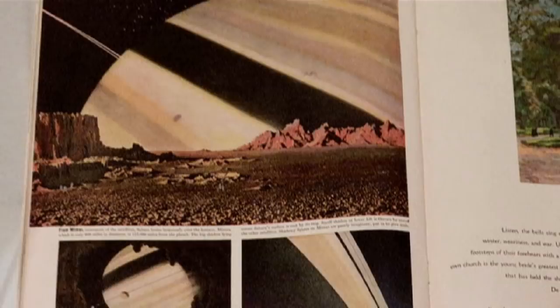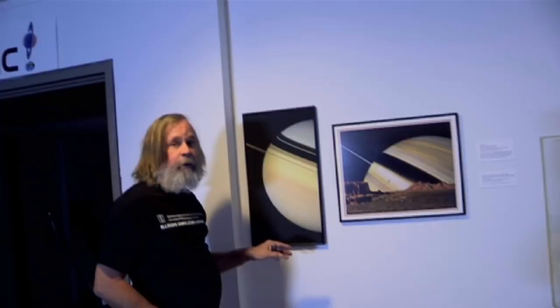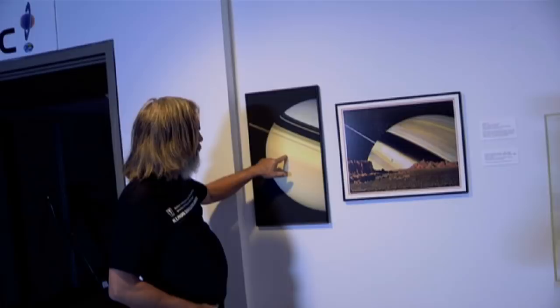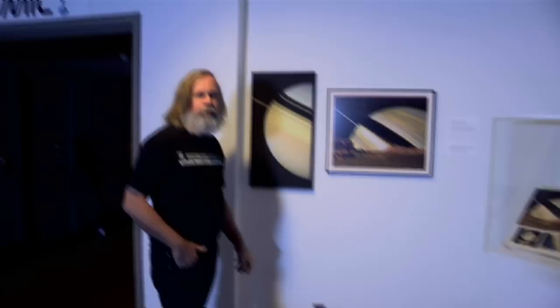In 1981, Voyager 2 flew close enough to Saturn to take a picture of Saturn that looks remarkably like what Chesley Bonestell was imagining 60 years, 50 years earlier. So imaginary image, real image.